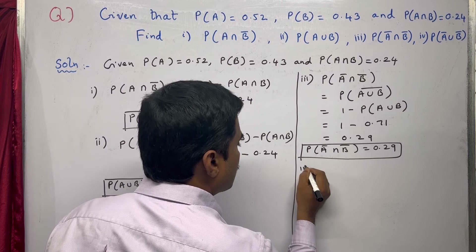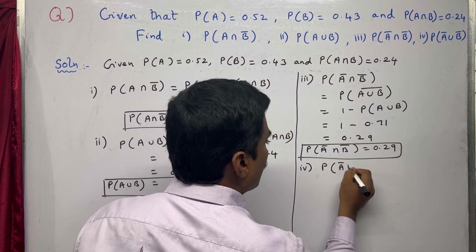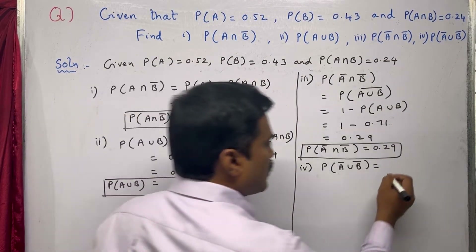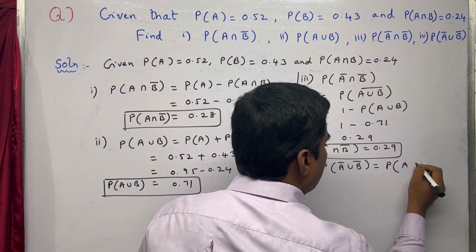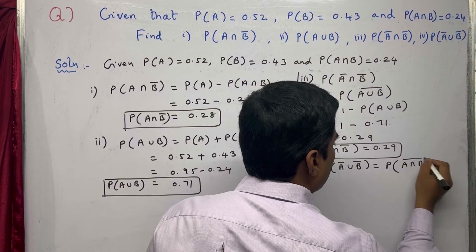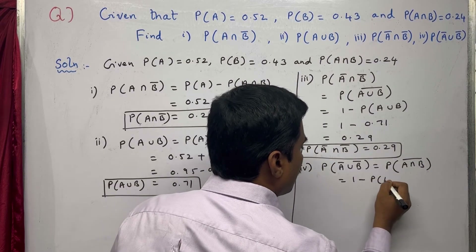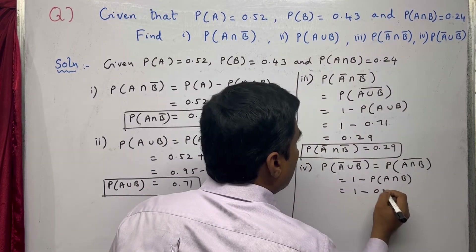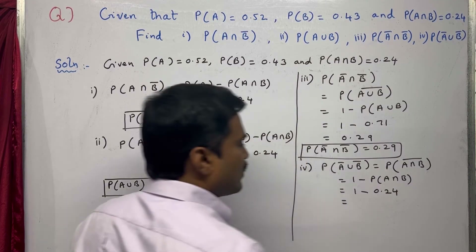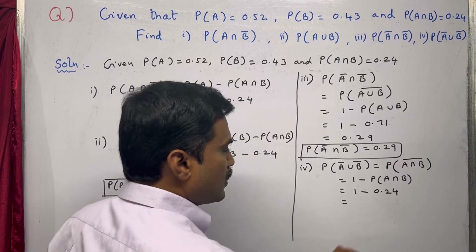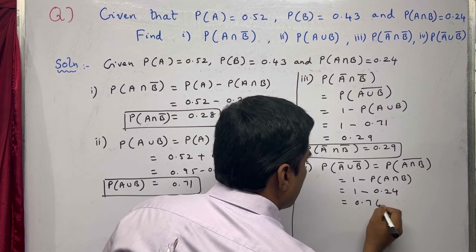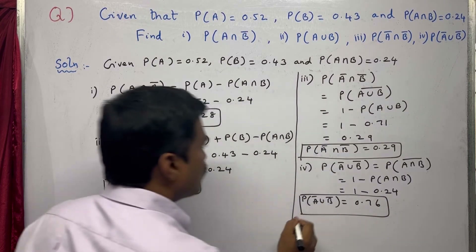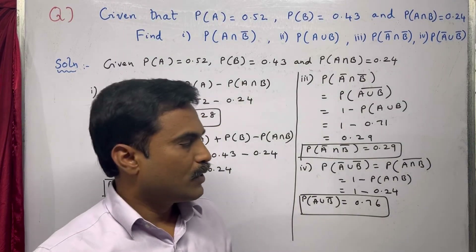The fourth and last one is P(Ā∪B̄). Using De Morgan's law, this can be written as P(A∩B) with a bar, which equals 1 − P(A∩B). P(A∩B) is given as 0.24, so: 1 − 0.24 = 0.76. Therefore P(Ā∪B̄) = 0.76.